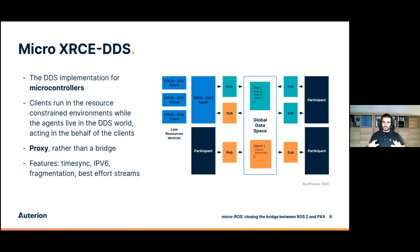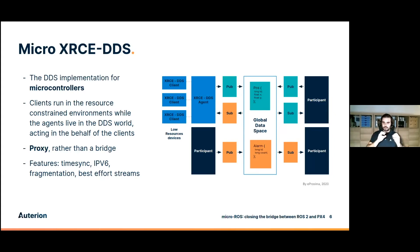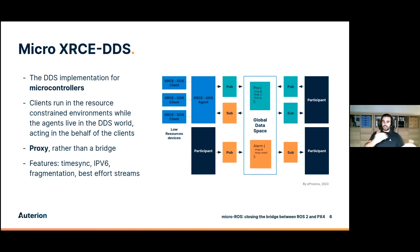Micro-XRCE-DDS is the DDS implementation for resource-constrained environments, running on the microcontroller side. Similar to the micro-RTPS bridge, it has two components: a client on the resource-constrained side and an agent on the non-resource-constrained side that lives in the DDS world. The key distinction is that this is a proxy, not a bridge. Features include embedded time synchronization, IPv6 support, fragmentation support, and best-effort stream methodologies.